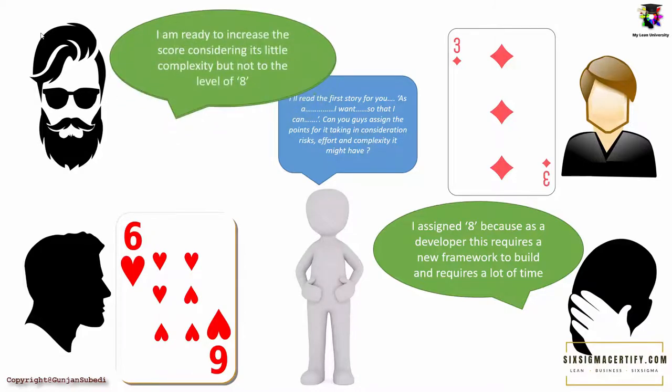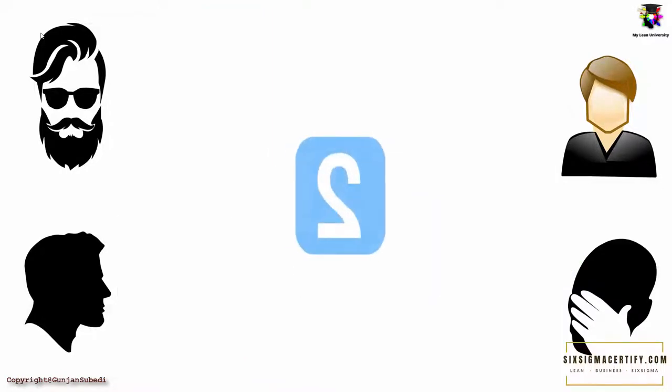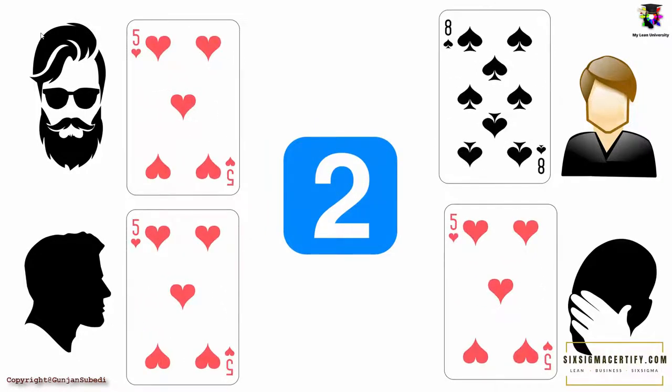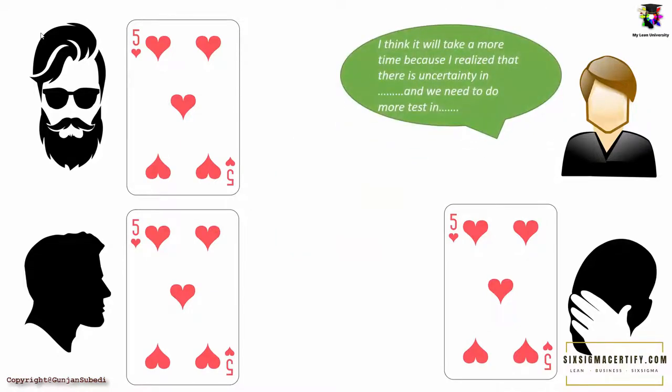He may be ready to come up but not to the level of 8. All people hear the discussion and put their views as well. Suppose on the second round all people came up with the 5 and 1 came up with the 8. The person with the 8 gave some good reason why he thinks the story will be harder to be developed to a product.